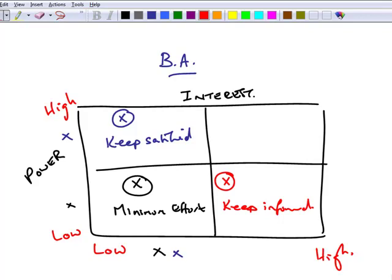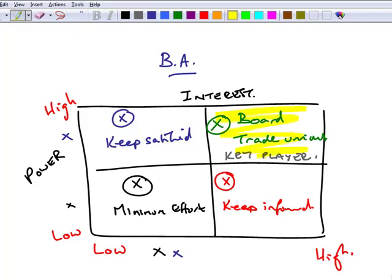The final one: we've got a high level of interest and a high level of power. That could be board members, board of directors. It could be trade unions. And remember, according to Mendelow's matrix, here are the key players. It's this quadrant which the company should focus on when addressing its strategy.